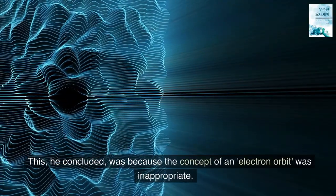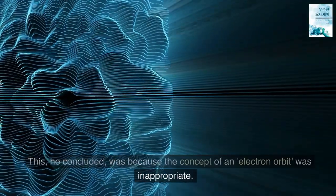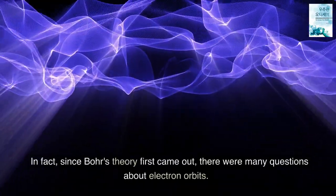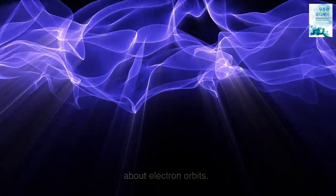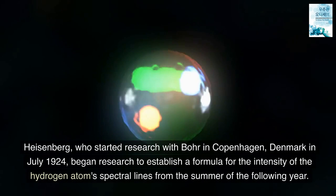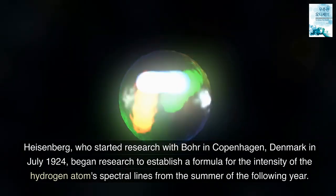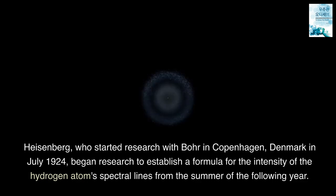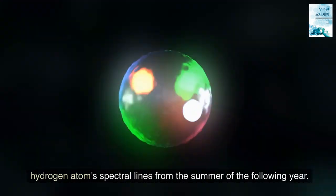Heisenberg noted that there is a definite difference between the electron frequency of an electron orbit in an atom and the frequency of the emitted light. This, he concluded, was because the concept of an electron orbit was inappropriate. In fact, since Bohr's theory first came out, there were many questions about electron orbits. Heisenberg, who started research with Bohr in Copenhagen, Denmark in July 1924, began research to establish a formula for the intensity of the hydrogen atom's spectral lines from the summer of the following year.